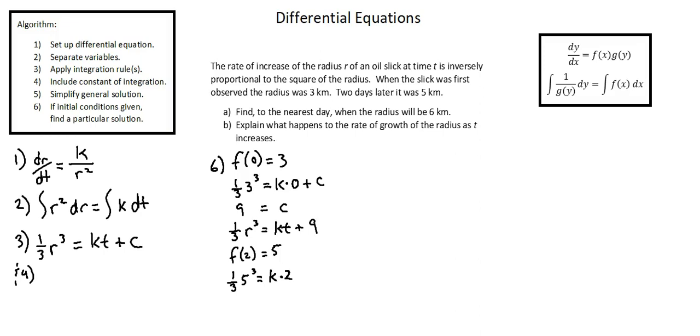And here, simplifying, we have 2k equals five cubed is 125 divided by three plus nine, which simplifies to k equals 49 over three. Now with a second iteration of the equation we arrived at in step three, we have one third times radius cubed equals k times t. We now know is 49 over three times t plus c, which we know is nine. With this equation, we can complete requirement a.